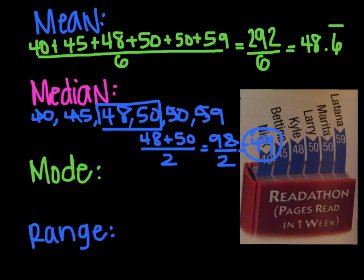The next one is mode. Mode. Remember that hint means most. The number that appears the most often. This can be nothing if there isn't one that appears the most. It can be just one number and it can be more than one number. In this case, the number that appears the most is 50.